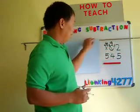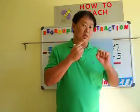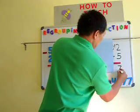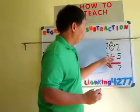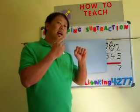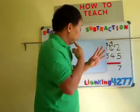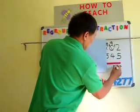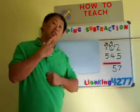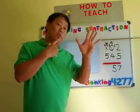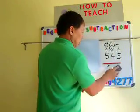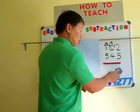So that's 12 take away 5: twelve, eleven, ten, nine, eight, seven — that's 7. And 9 take away 4: the top number is bigger, so we can subtract — nine, eight, seven, six, five — that's 5. And 6 take away 5: six, five, four, three, two, one — that's 1. So the answer is 157.